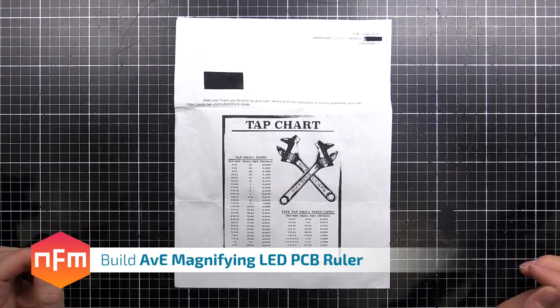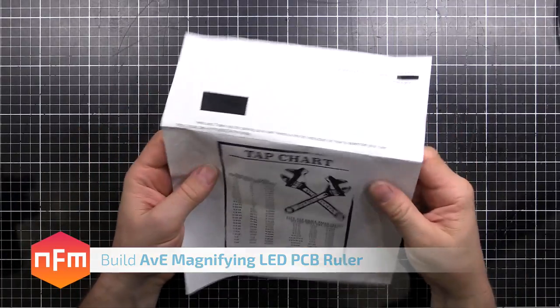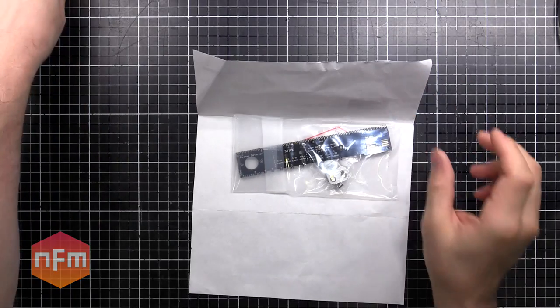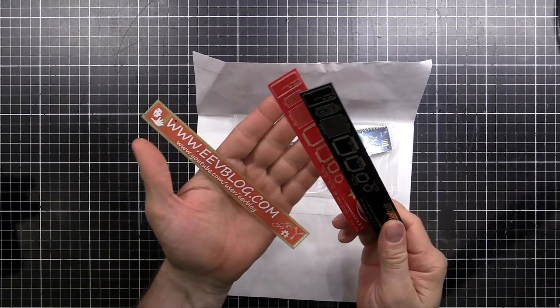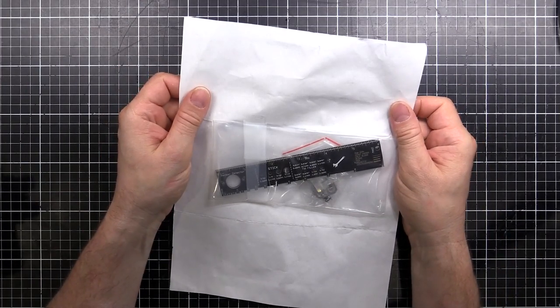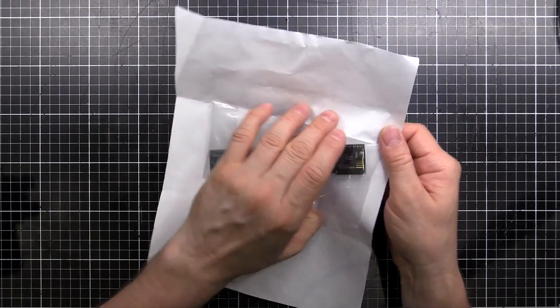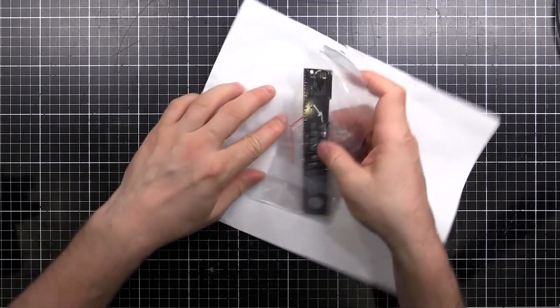Hey guys, welcome to another video. We've got a treat, special from the land of interesting colloquialisms. It is an Ave ruler. I've got a few PCB rulers here - some Adafruit and EEVblog rulers, but I had a friend give me two of these. One for myself and one to make for him. So we're going to go through and build this Ave ruler and see how it goes together.